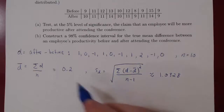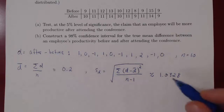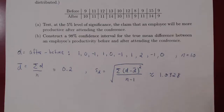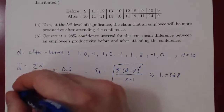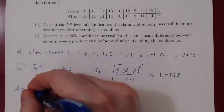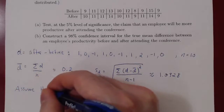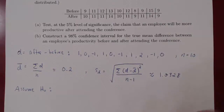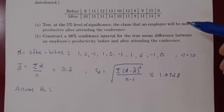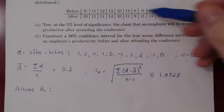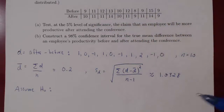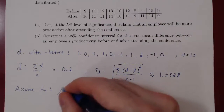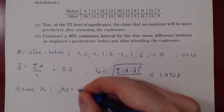Now we have our sample mean difference and our sample standard deviation for the differences, so we can formulate our hypotheses. We will be under the assumption of H0. H0 is the hypothesis of no change — the conference had no impact on employees' productivity, so the after scores and the before scores are the same, and the mean difference is 0. Therefore, H0: μ_d = 0.